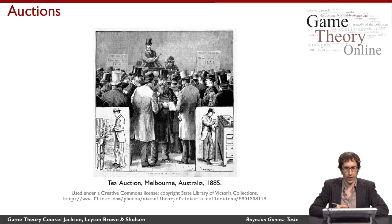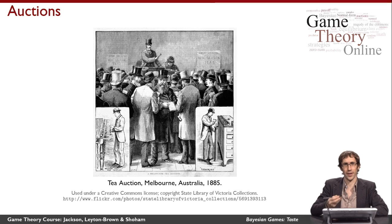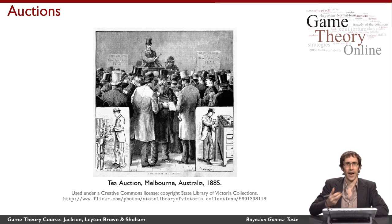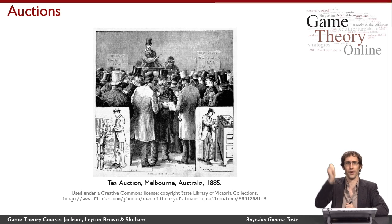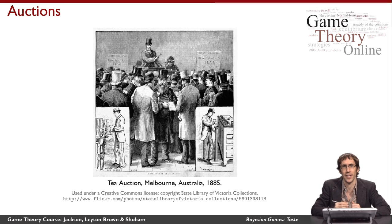Canonically when we think about auctions, we think about something like this woodcutting from 1885 showing the auction of tea in Melbourne, Australia. We've got a guy in a top hat standing at the front of the room with a gavel in his hand, probably talking in a funny voice, and at some point he bangs the gavel and somebody just won a bunch of tea.